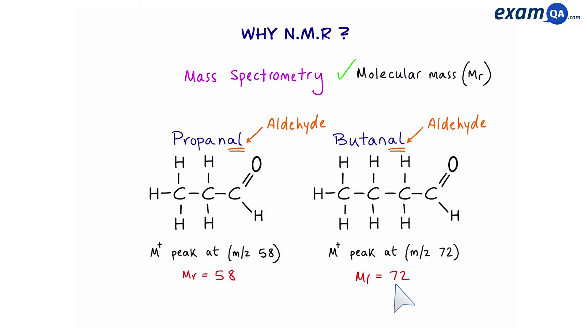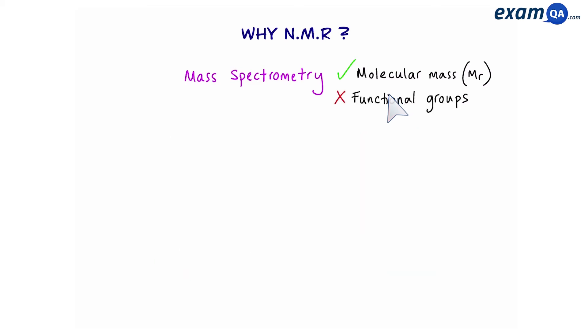So mass spec is useful when distinguishing between molecules that have different MRs but have the same functional group, something that IR spec was not able to do. However, since it can't tell us the difference between functional groups, this can also be a problem.